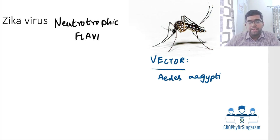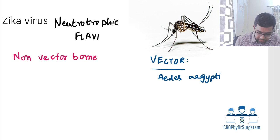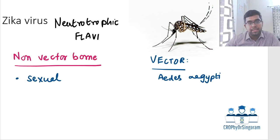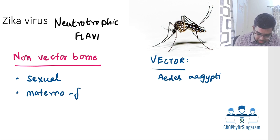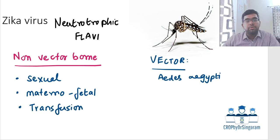The main mode of Zika virus transmission is vector-borne. However, non-vector-borne transmission is also possible. These include sexual transmission — especially from partners returning from an endemic area — materno-fetal transmission from the mother to the baby during pregnancy, and blood-borne transmission.